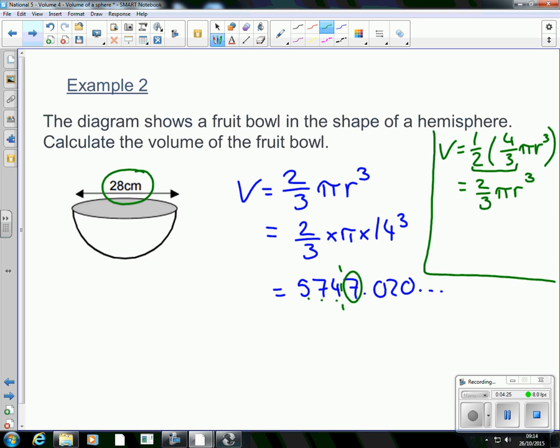Next digit is 7. After that, we'll round it up to be 5750 centimeters cubed.